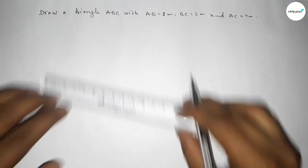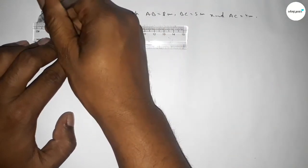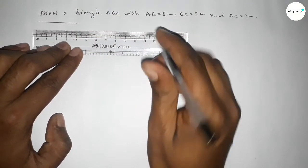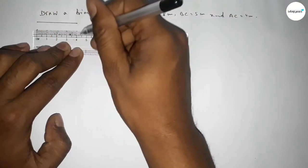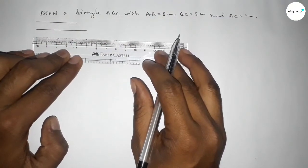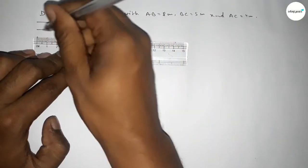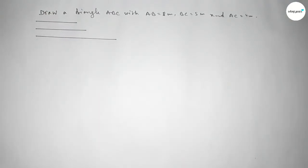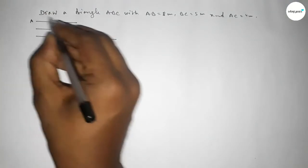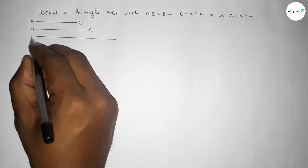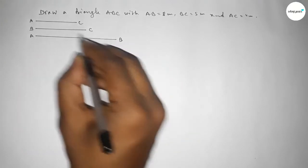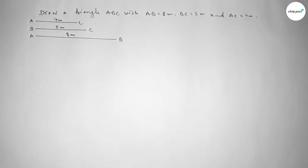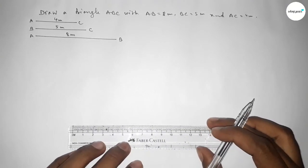First of all, we draw a line of length 4 centimeter — this is AC. Then drawing another line of length 5 centimeter — this is BC. And last, drawing a line of length 8 centimeter — this is AB. So this is 4 centimeter, 5 centimeter, and 8 centimeter.